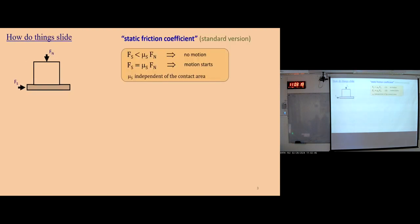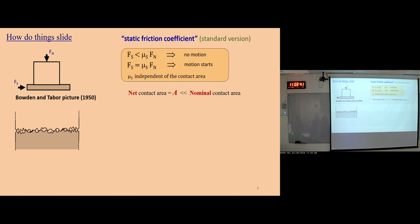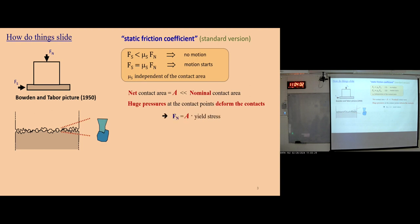First, let's understand how things slide. When we compress two blocks together with normal force and increase the shear force until motion starts, the ratio between the shear force and the normal force is called the static friction coefficient, and it's usually independent of contact area. At the microscopic level, the interface is rough, combined with many contact points and air pockets without contact. The net contact area is much smaller than the nominal contact area, creating huge pressure at contact points that deforms them under yield stress. When shear force makes the shear stress at a local point larger than the shear strength, sliding happens, and the static coefficient equals the shear strength over the yield stress.